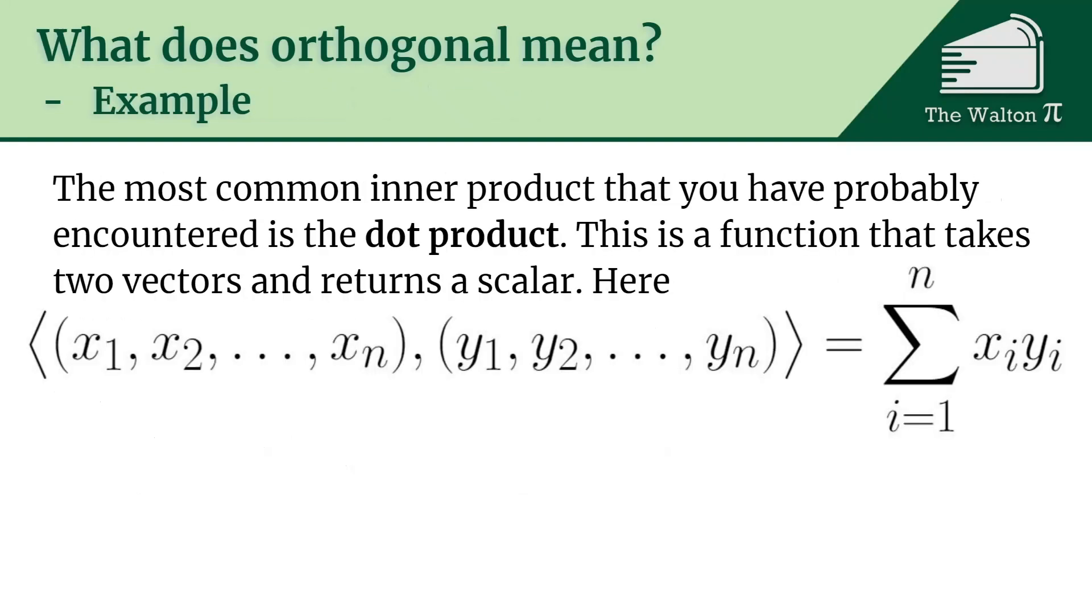The most common inner product that you've probably encountered is the dot product. If you're looking for what it means for two things to be orthogonal, odds are pretty high that you're doing this after you've just been introduced to the dot product.